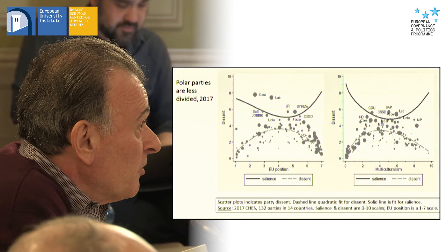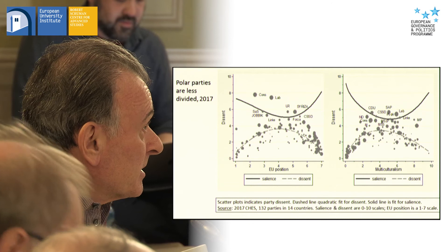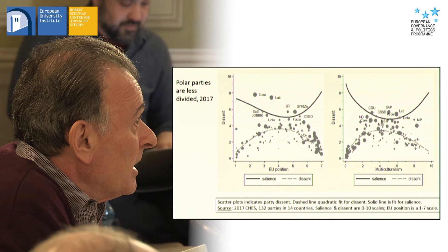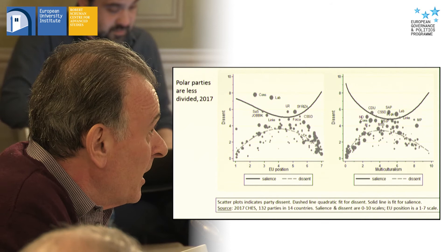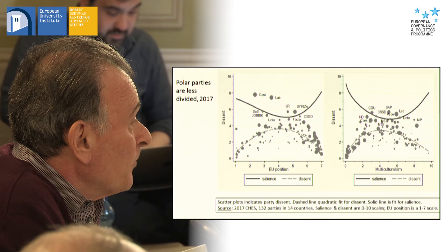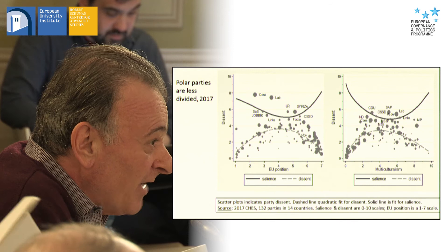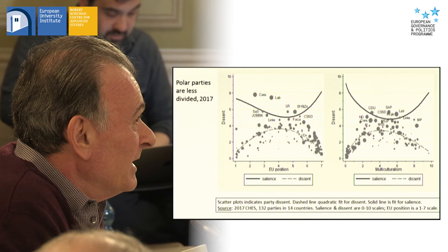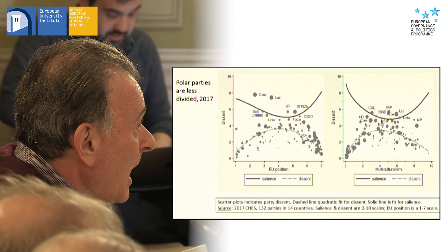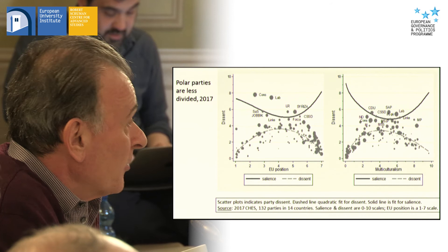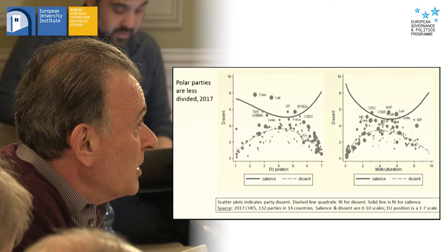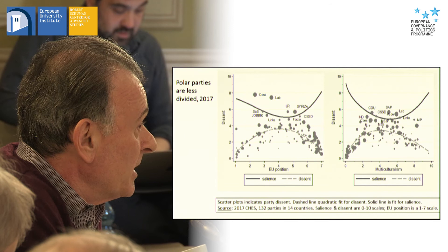These two charts show European integration and multiculturalism. The solid line is salience, this is a quadratic fit, and the dashed line is internal party divisions. These are mirror images of each other. Two key points: radical right parties have greater salience and less internal divisions than any other party family, and they attach greater significance to multiculturalism and European integration in our data.